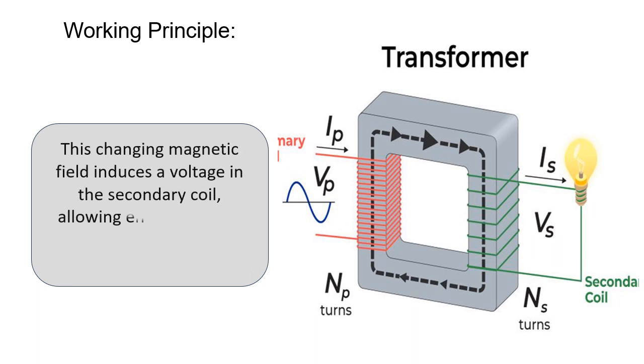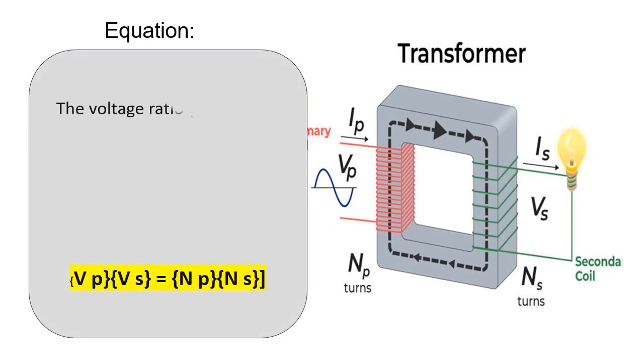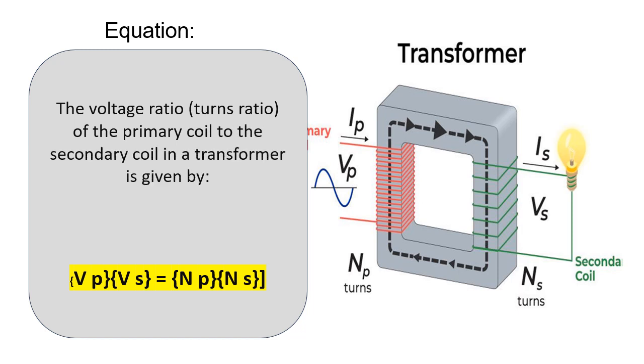allowing energy transfer from the primary to the secondary coil. The voltage ratio (turns ratio) of the primary coil to the secondary coil in a transformer is given by Vp/Vs = Np/Ns, where: